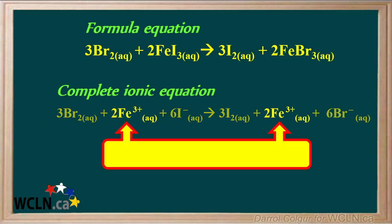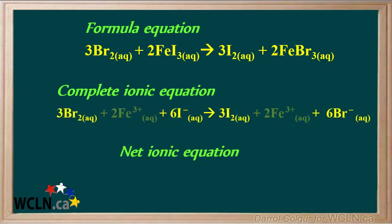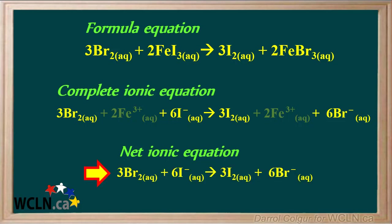Notice the two Fe³⁺ aqueous ions are identical on each side of the equation. Therefore, the aqueous Fe³⁺ ion is a spectator ion in this reaction. So when we write the net ionic equation, we can leave out the two Fe³⁺ ions on each side, giving us our final net ionic equation for this reaction.